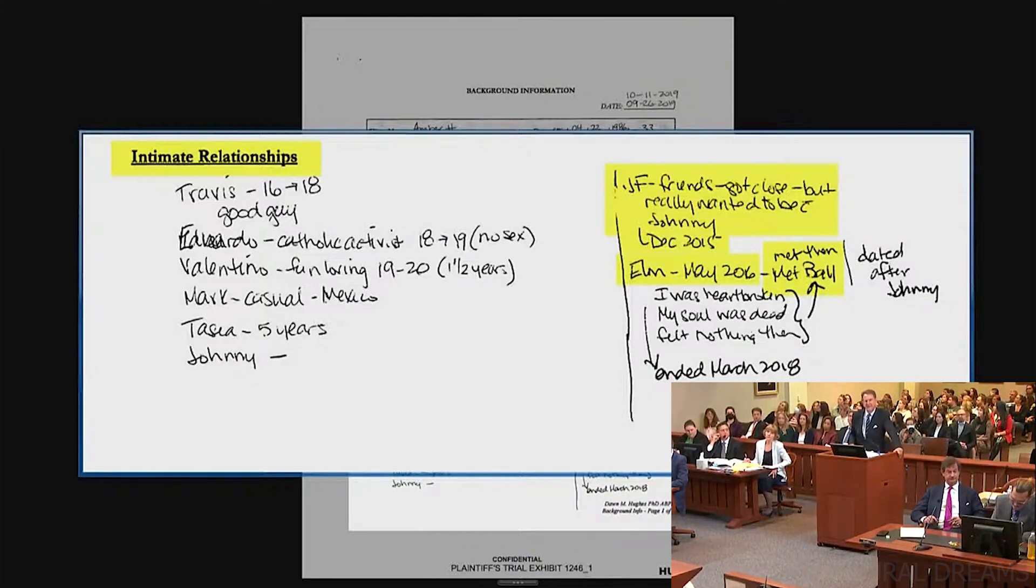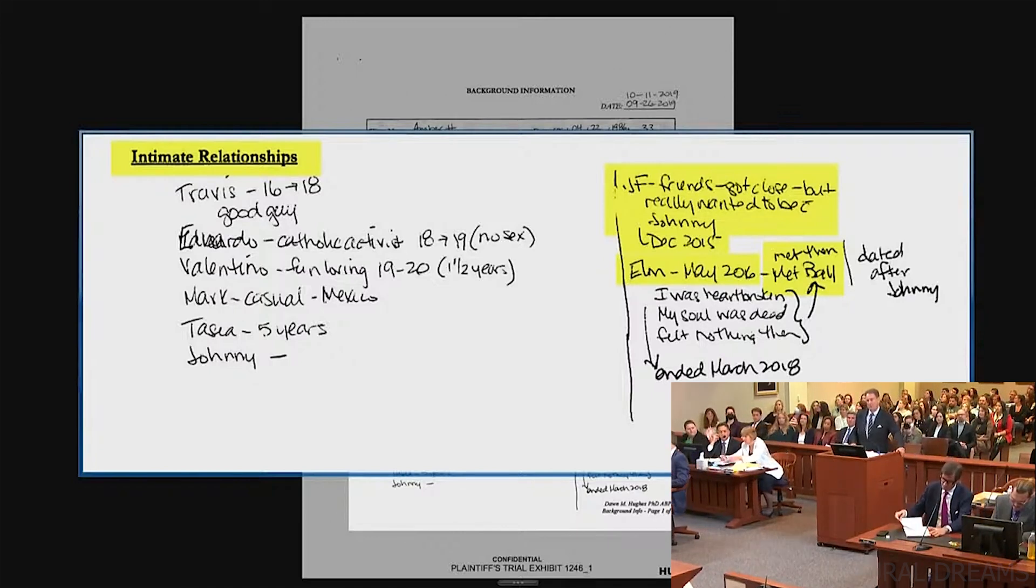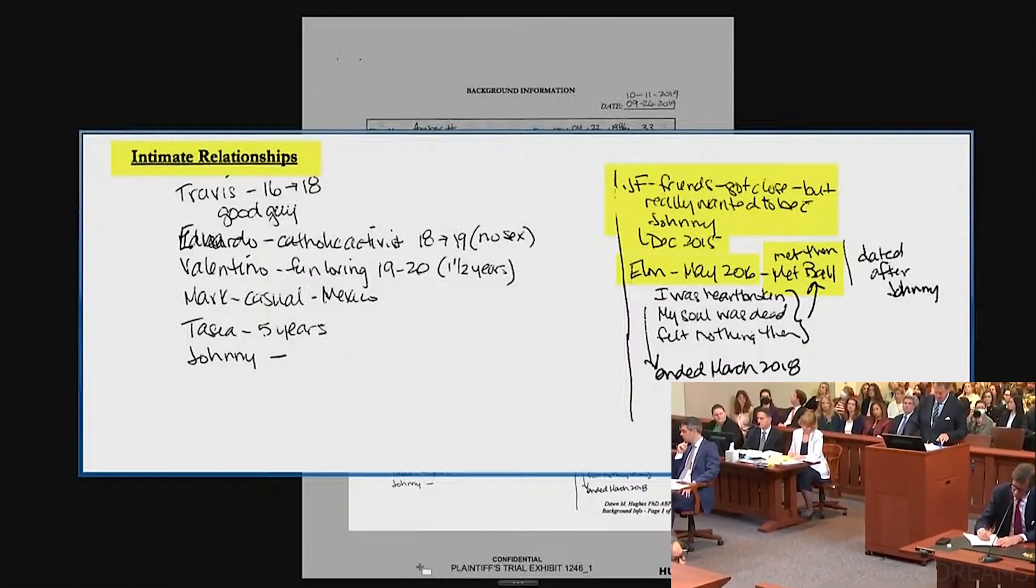And she says she dated him after Johnny. Correct. She met Elon Musk in May 2016. When did she file the TRO? The last answer was May 21st. I believe it was May 26th, 27th. I'm correct. When did she start dating Elon Musk? Sometime after that. All right. Sometime after the TRO? I believe so, yes. Okay.